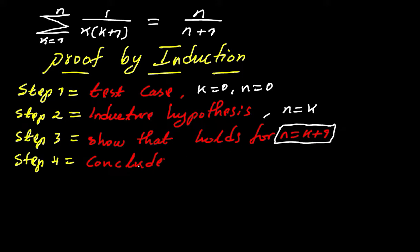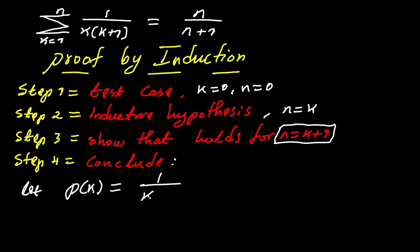The fourth step is just to conclude. If you are new here, I created a video some months ago on proof by induction with a more complicated question — I'll put a link above and in the description box. Now let's get into the video. For the first step we have the test case, and we have to show that it's true for k equal to zero. We're going to let our statement p of k be one over k times k plus one.